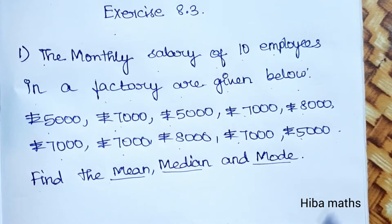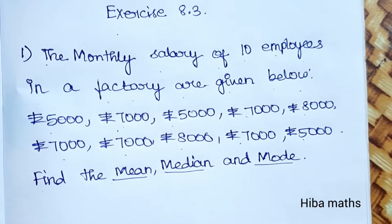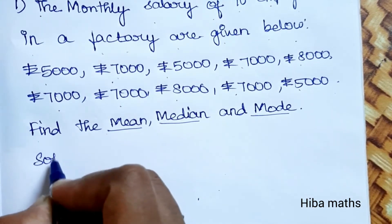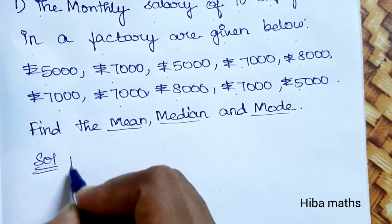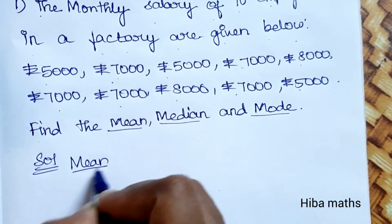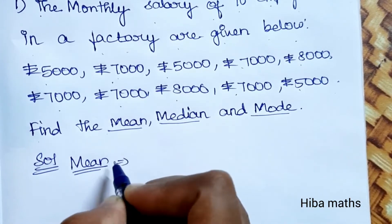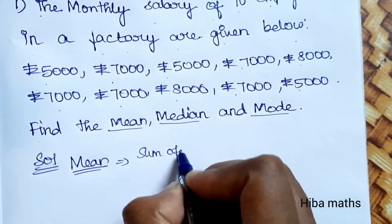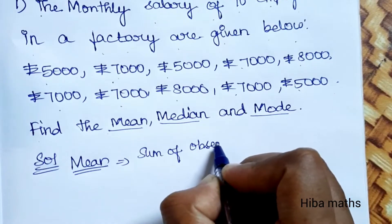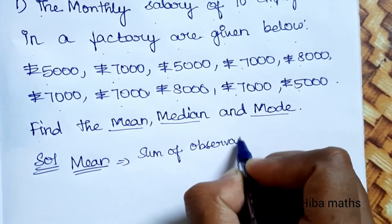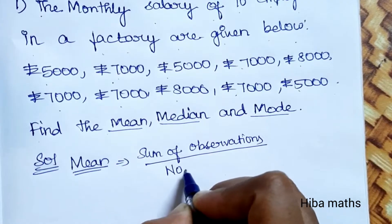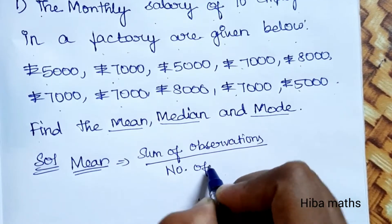Let's take a look at this sum. In this sum, there are three questions given in one question. First, let's solve one by one. In the solution, the mean will be given first. The mean formula is: sum of observations divided by number of observations.